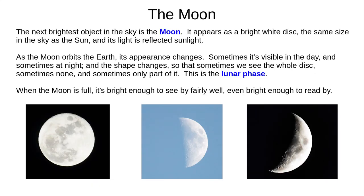The moon is much less bright, but still the second brightest object in the sky. It also appears as a disk, and by coincidence is the same angular size as the sun, about half a degree. Its light is entirely reflected sunlight, and it appears white with darker grey patches. The moon's appearance changes over its orbit. Sometimes it is visible in the day, and sometimes at night. As its phase changes, we might see all of it, some of it, or none of it. A full moon can be bright enough to read by.